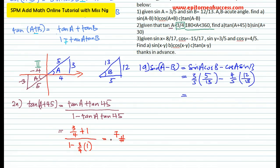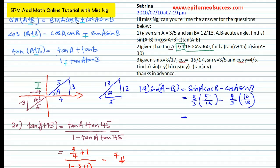The same technique applies throughout: based on the question, form your triangle. You must determine which quadrant the triangle is in based on the positive and negative values given to you. Form the triangle, get all the sides, and you will be able to answer all the questions using the formula — whether it's cosine, sine, or tangent. For sine(A + 30), sine 30 is half, so you just put in half. Sine A from the same triangle is negative 3 over 5. Substitute into the sine addition formula and you get your answer.